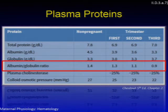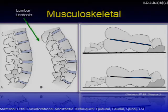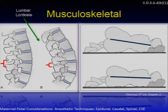Plasma proteins change significantly during pregnancy — the most notable being that the albumin-to-globulin ratio decreases from the non-pregnant state as pregnancy progresses. There are also significant musculoskeletal changes. Normal lumbar segments in the non-pregnant state show nice interspinous spaces. In pregnancy, increased lumbar lordosis narrows these spaces significantly, making neuraxial anesthesia more challenging.